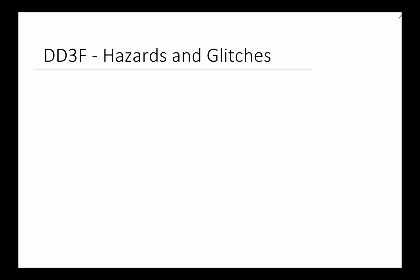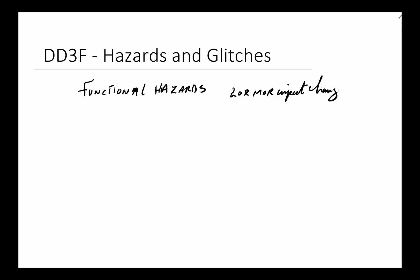In general, we look at glitches in two different ways: whether it's just one input changing that caused the problem, or multiple inputs changing that caused the problem. Let's start with the case where multiple inputs are changing at the same time. These are generally called functional hazards. With functional hazards, two or more inputs change and your output, instead of being what you expected, might be something different.